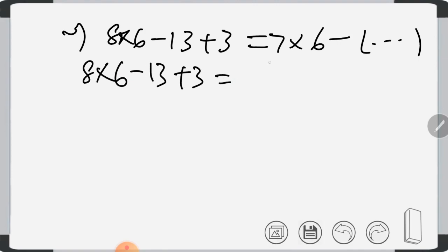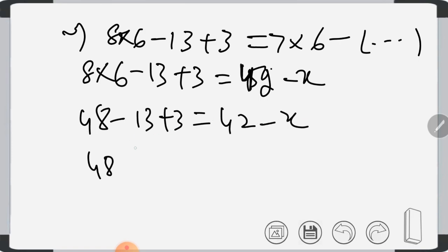5th part: 8 multiplied by 6 minus 13 plus 3 is equal to 7 multiplied by 6 minus something. First multiply: 8 times 6 is 48 minus 13 plus 3 equals 7 times 6 which is 42 minus X. So 48 minus 13 is 35, no wait, 48 minus 13 is 35 plus 3 equals 38, which equals 42 minus X. Bring X to this side: 38 plus X equals 42, so X equals 4.